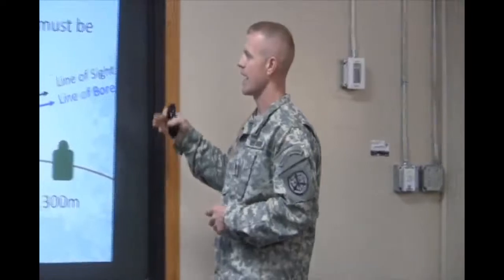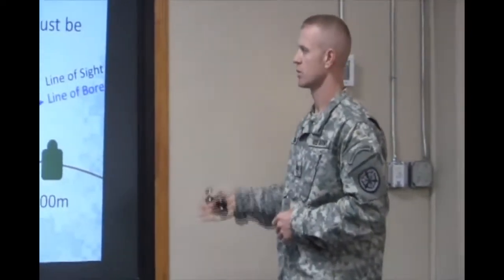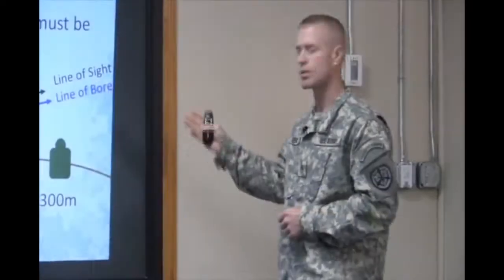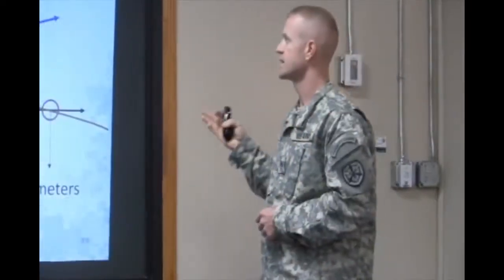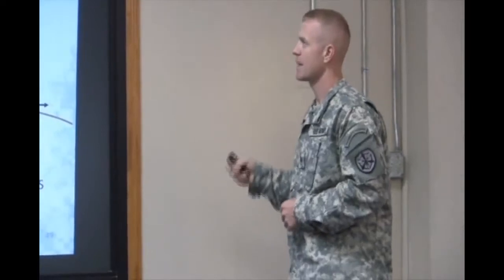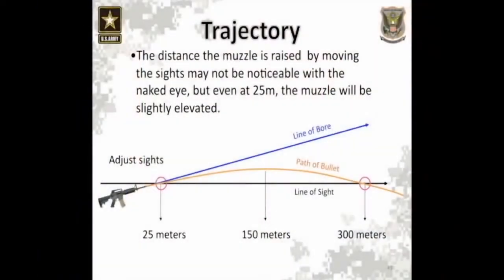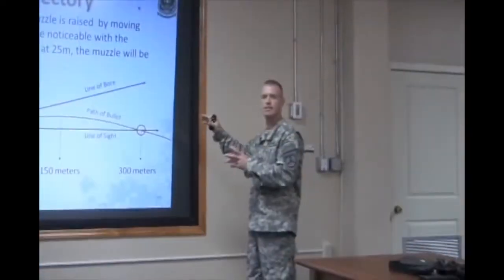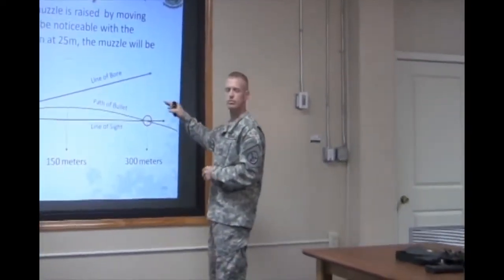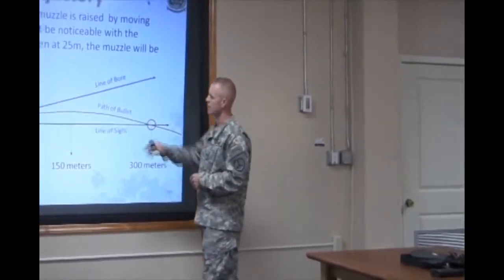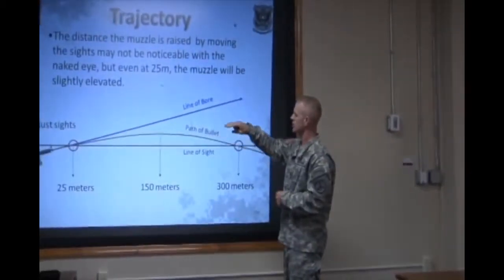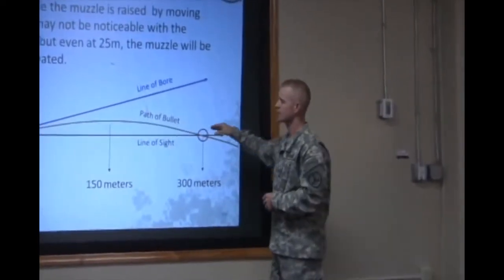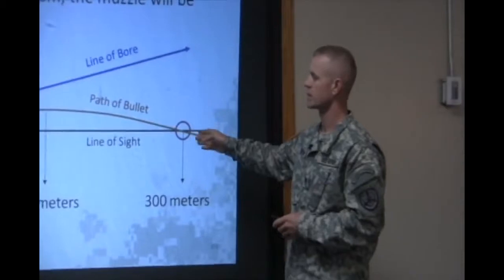To be able to aim at the target, the sights must be adjusted so the muzzle will be elevated and the line of sight will still be on the target. The distance the muzzle is raised by moving the sights may not be noticeable to the naked eye, but even at 25 meters, the muzzle will be elevated slightly. This is a very drastic example of what it looks like from the side — the angle of departure is increased, allowing the path of our bullet to cross our line of sight at 25 and 300 meters.